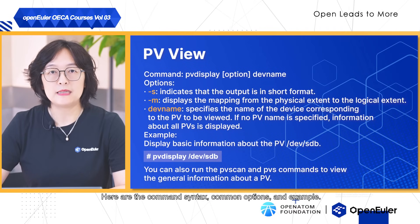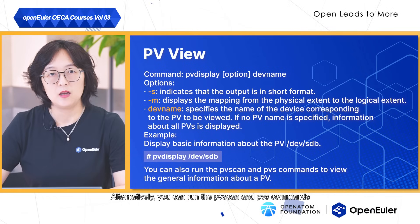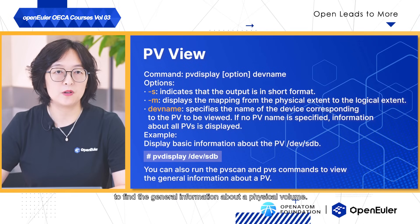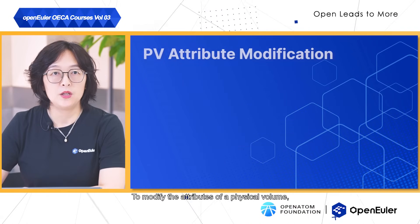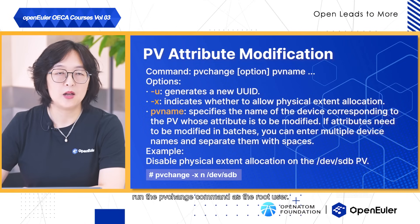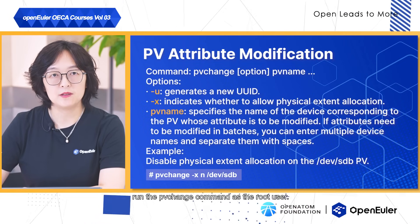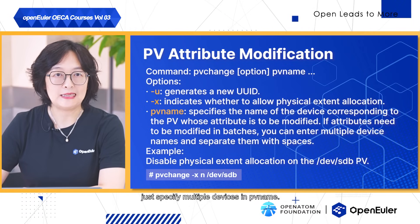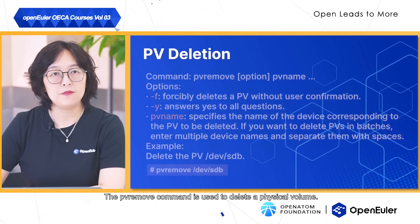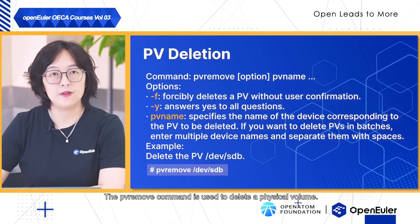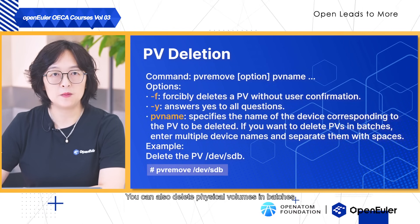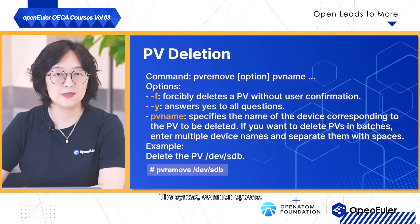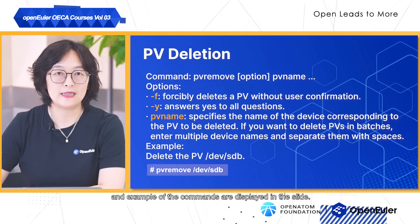Here are the command syntax, command options and example for pvdisplay. Alternatively, you can run the pvscan and pvs commands to find general information about a physical volume. To modify the attributes of a physical volume, run the pvchange command as the root user. If you want to modify physical volumes in a batch, just specify multiple devices in the pvname. The pvremove command is used to delete a physical volume. You can also delete physical volumes in batches by specifying multiple device names. The syntax, command options and example of the commands are displayed in the slide.